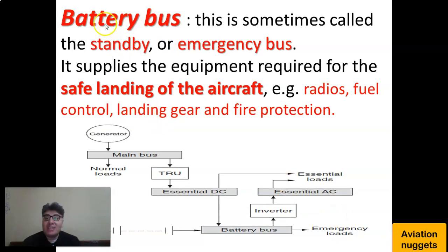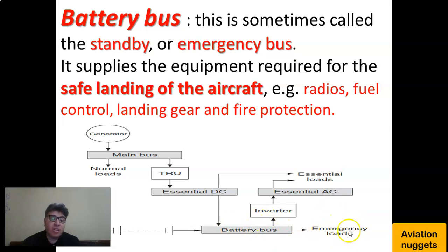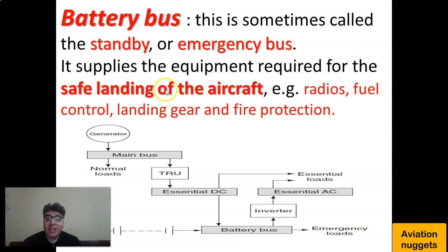Of the very highest rank is the battery bus and emergency loads. The battery bus is sometimes called the standby or emergency bus. It supplies the equipment required for the safe landing of the aircraft, such as radios, fuel control, landing gear, and fire protection.